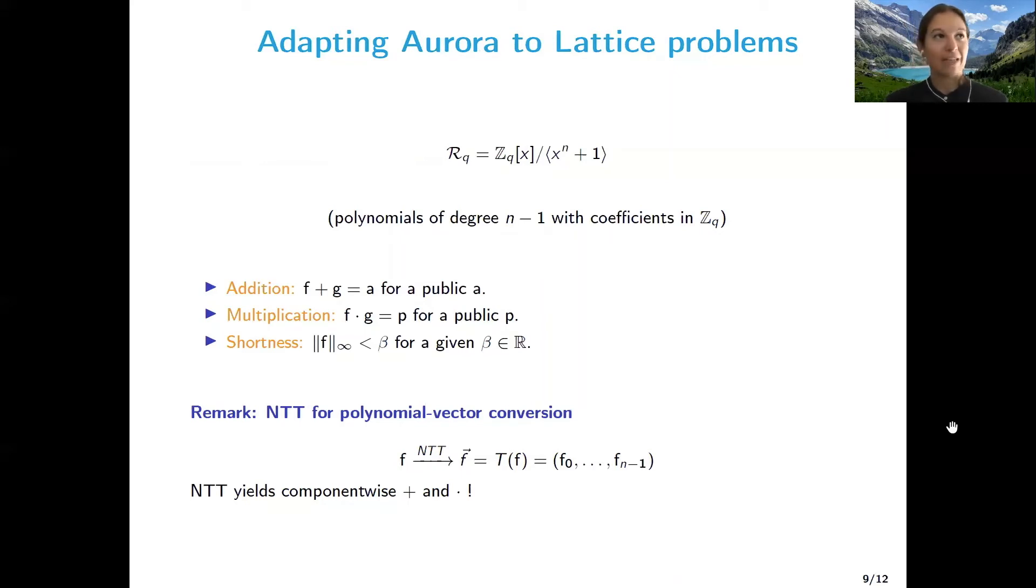So to use Aurora though, it's not very clear how to adapt it, at least at the beginning it was not very clear how to adapt it to lattices. And we will now show how to use Aurora in the lattice environment, in particular when considering ideal lattices. So lattices over the ring RQ, which is ZQ[X] over (X^n + 1), which essentially contains polynomials of degree n minus one with coefficients in ZQ.